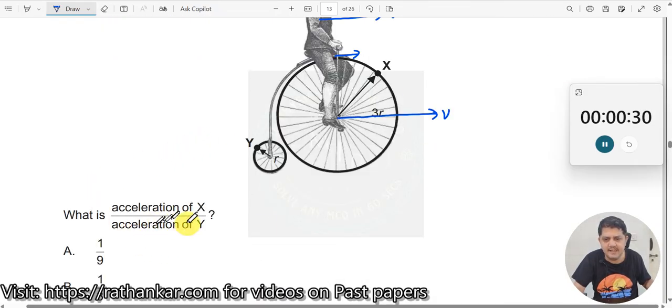What is acceleration of X by acceleration of Y? Acceleration of X. What kind of acceleration will it have? The centripetal acceleration. What is centripetal acceleration? A should be equal to V squared divided by R over here.